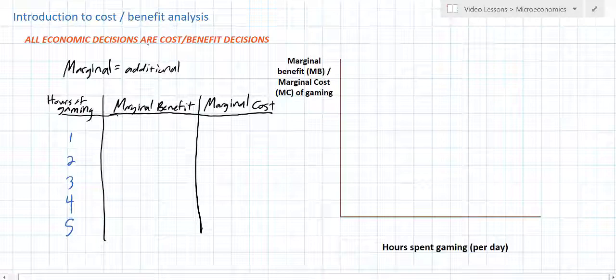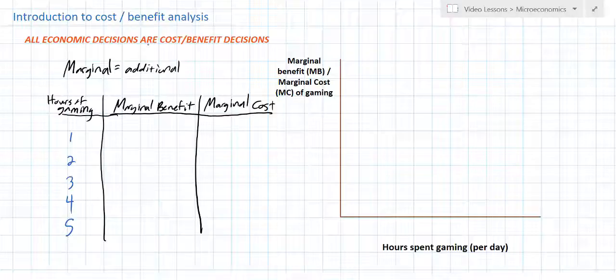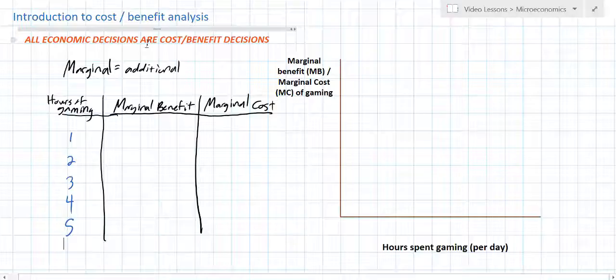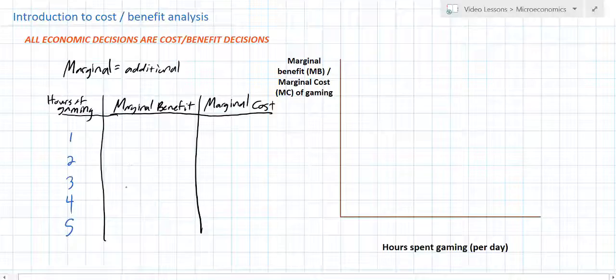How do we measure the benefit we get from doing something? One way we can measure our benefit, or express how much benefit we derive from an activity or from a good or service, is how much we're willing to pay for that good or service. So let's consider the marginal benefit of gaming as how much you'd be willing to pay to do one hour of gaming, two hours of gaming, three hours of gaming, and so on.